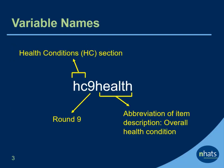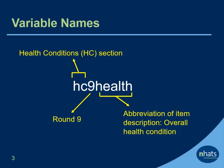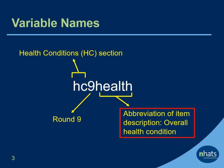Variable names in NHATS begin with a two-letter section abbreviation, followed by the round number and the variable stem, which gives an abbreviated description of the item. For example, in the variable name HC9Health, the first two letters indicate that this variable is from the Health Conditions or HC section, the number indicates that it was asked in round 9, and the stem Health is an abbreviation for the respondent's overall health condition.